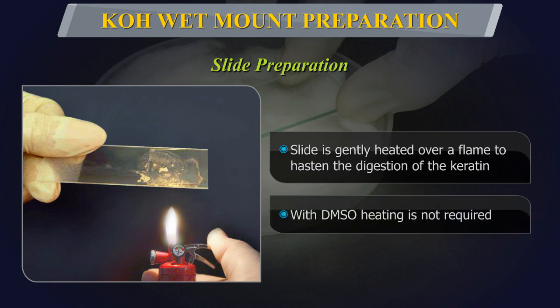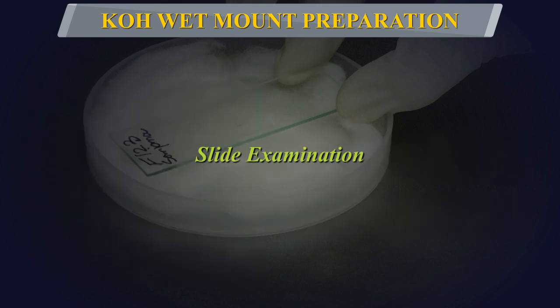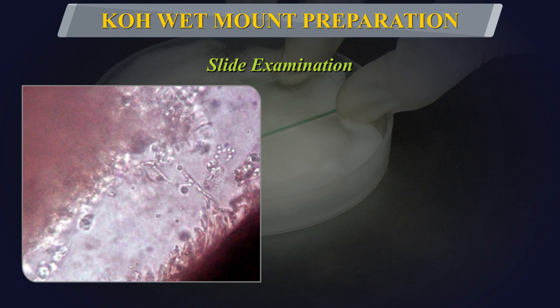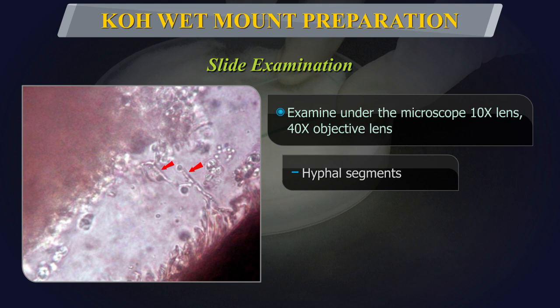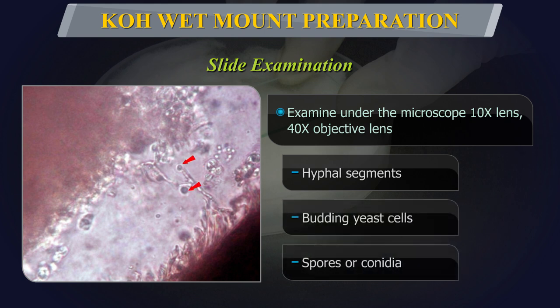Slide Examination: As soon as the specimen clears, it should be examined under the microscope, first using the 10x lens and then proceeding to the 40x objective lens. The condenser iris diaphragm should be sufficiently closed to allow better contrast. Hyphal segments, budding yeast cells, spores or conidia etc. can be observed according to the type of fungal infection.